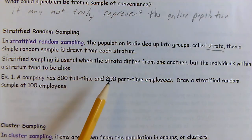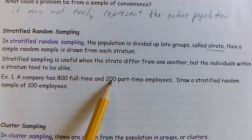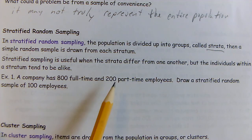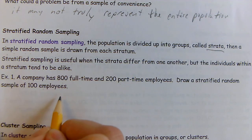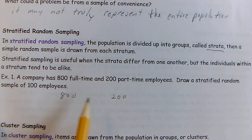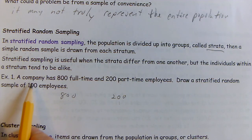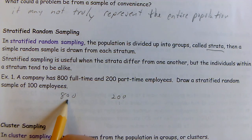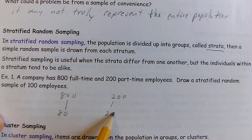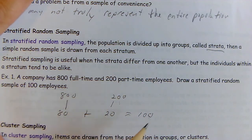For example, if a company has 800 full-time employees and 200 part-time employees and you want a stratified random sample of 100 employees — these are the two different strata. You take 10% from each group: 80 from full-time and 20 from part-time. It's the same percentage from each stratum, and within each group it's a simple random sample where everybody was equally likely to be chosen — giving you your stratified random sample of 100 employees.